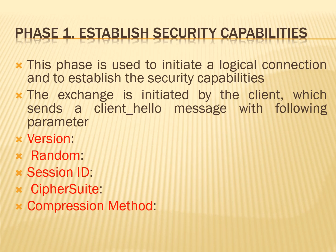The exchange is initiated by the client, which sends a Client Hello message with the following parameters. The first parameter is called version — this is the highest secure socket layer version understood by the client. The second parameter is called random — this is a client-generated random structure consisting of a 32-bit timestamp and 28 bytes generated by a secure random generator. These values serve as nonces and are used during key exchange to prevent replay attacks.